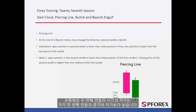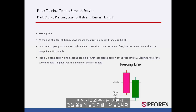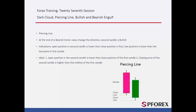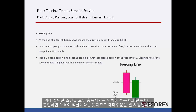The open and low price of the second candle is lower than the close and low price of the first candle respectively. The ideal Piercing Line pattern develops whenever the open price of the second candle is lower than the low price of the first candle, and whenever the close price of the second candle is above the midpoint of the first candle's whole body. In Dark Cloud and Piercing Line, meeting any of the ideal conditions indicates an appropriate price for a trade order.